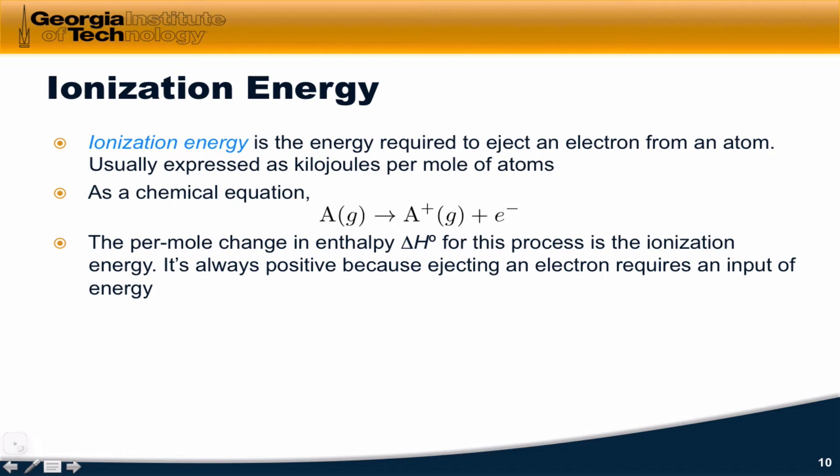We'll talk specifically about what enthalpy means in a later video, but for now, you can just imagine that this is the energy required to do this process. Ionization energy is always positive because it always takes energy to eject an electron from the atom. To give you an example, for a mole of hydrogen atoms, the energy required here is 1,320 kilojoules per mole, which is quite a lot of energy.